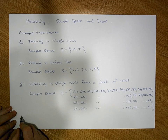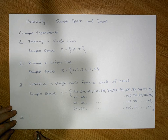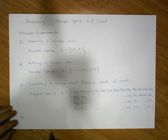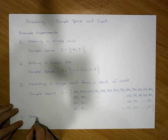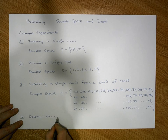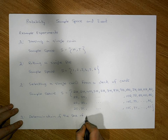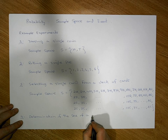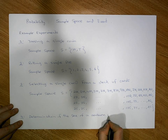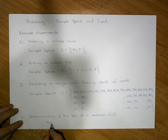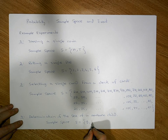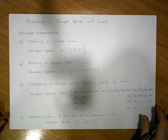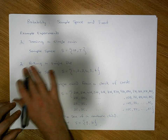Another experiment could be determining the sex of a newborn child — an experiment where we don't know what the outcome will be. In this case, the sample space S equals {G, B}, where G represents a girl and B represents a boy. These are some basic sample spaces — simply a list of all possible outcomes associated with a particular experiment.